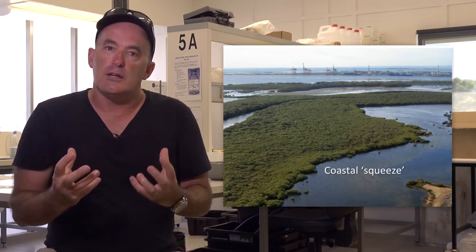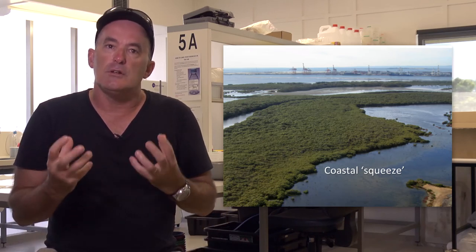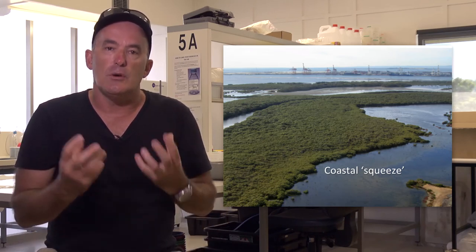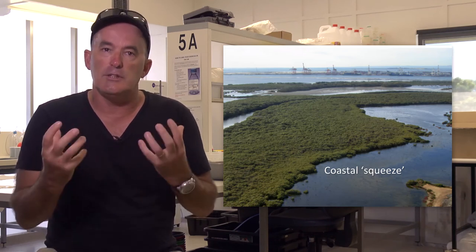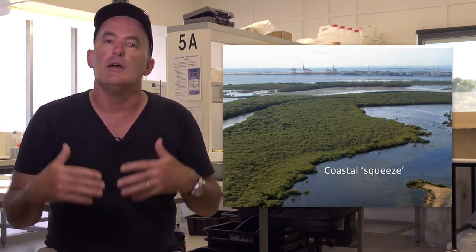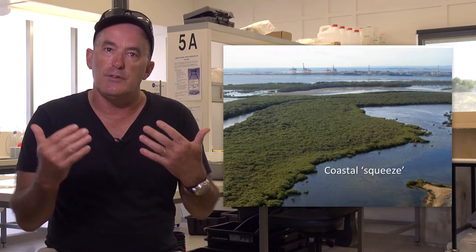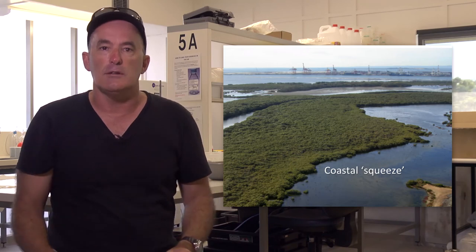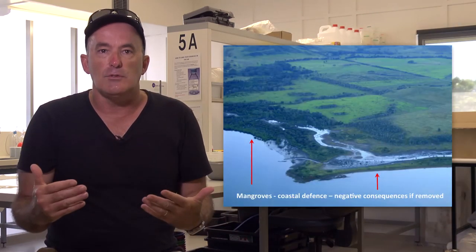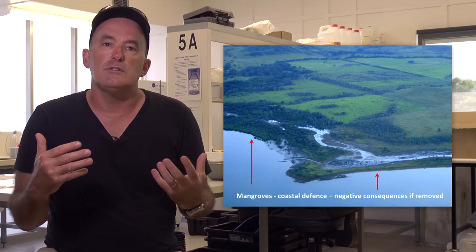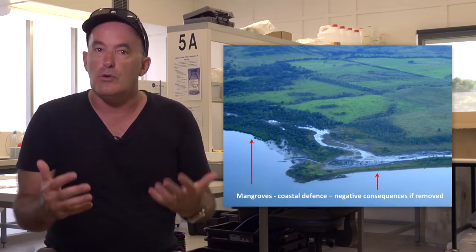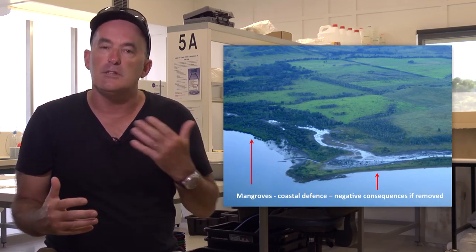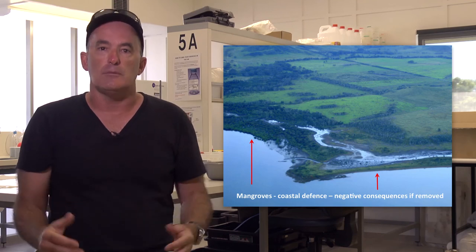Mid-range projections of changes in climate to tropical coastal areas suggest a potential loss of 10-20% of mangroves over the next 50-100 years. As with other ecosystems, these changes are likely to be far-reaching when combined with local factors such as deforestation and pollution.